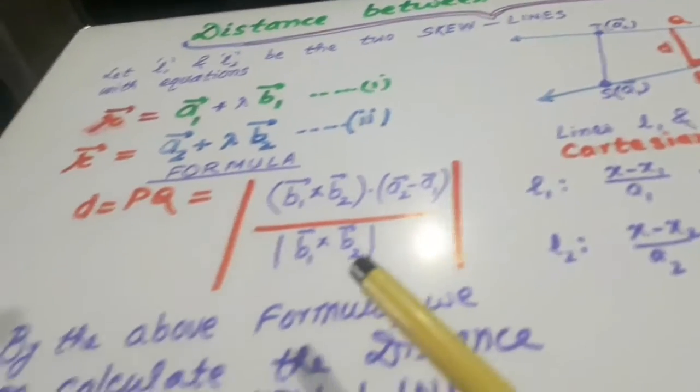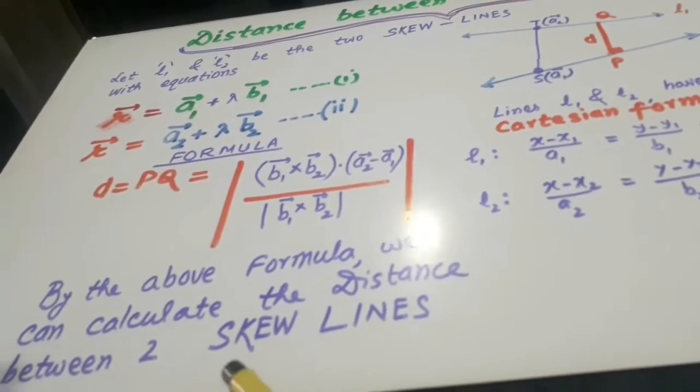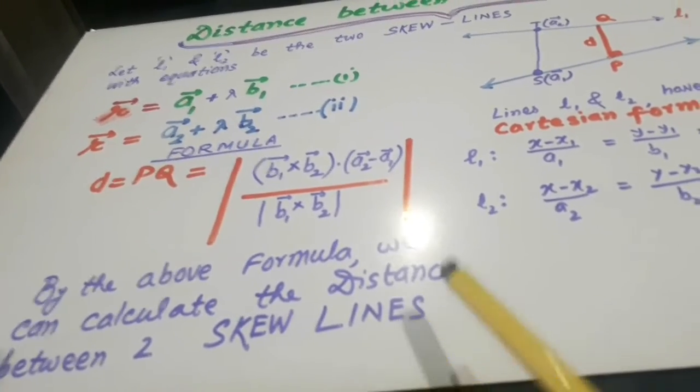By the above formula, we can calculate the distance, shortest distance between two skew lines. Here I come with an example.